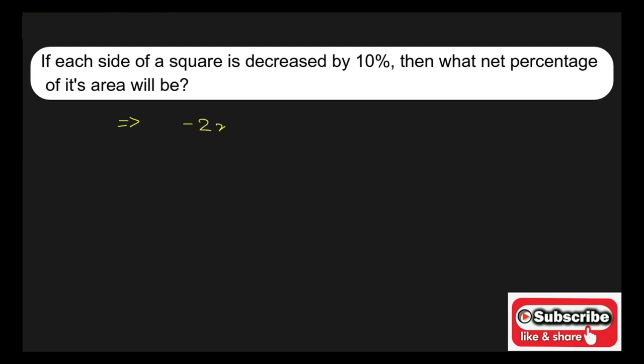that is -2x + x²/100 percent. In the question, the value of x is equal to 10. Now substitute the value of x in the formula. We'll be getting -2 into 10 plus 10